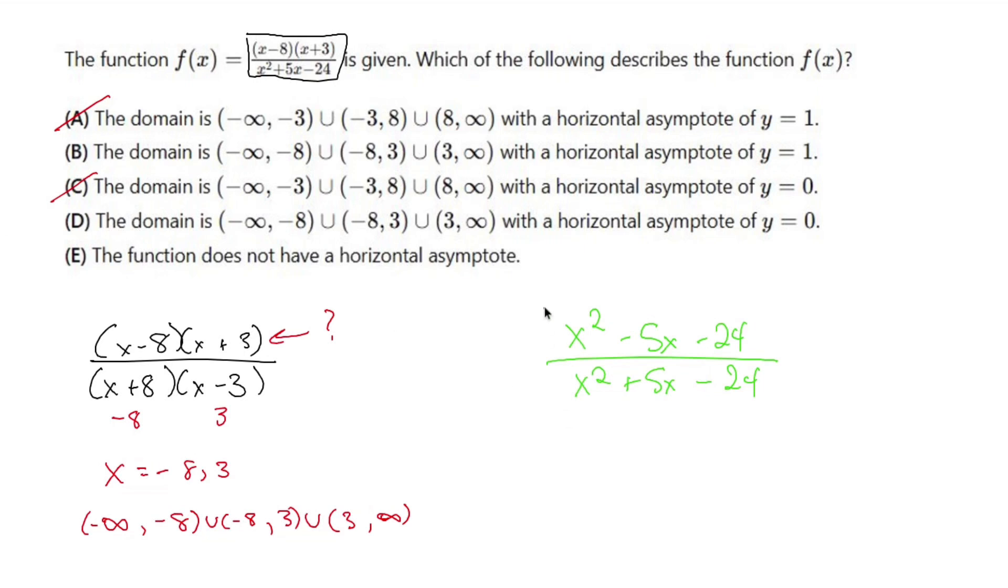So we take the leading coefficient divided by the leading coefficient. Since the degrees are the same, it's literally just the leading coefficient, which is invisible 1, divided by the leading coefficient, which is invisible 1. And 1 divided by 1 is 1. And since this is a horizontal asymptote, it's going to be a horizontal line, which is y equals 1. So y equals 1 is going to be my horizontal asymptote. So not A and not B, which eliminates C. And it does have a horizontal asymptote.